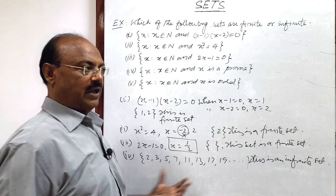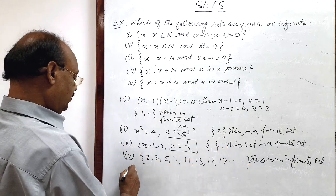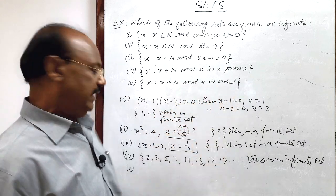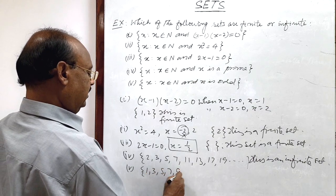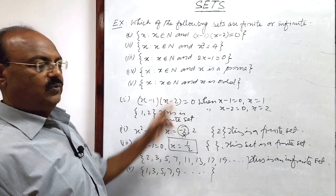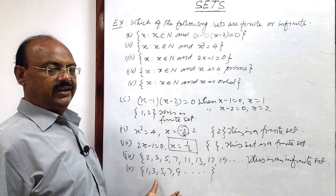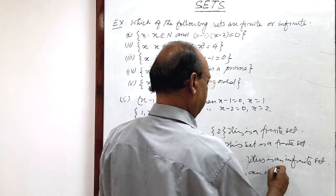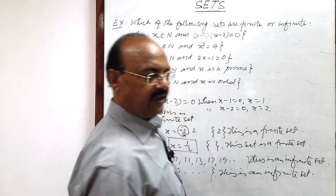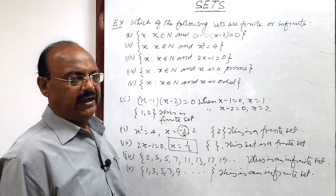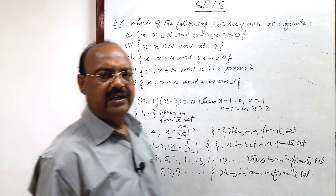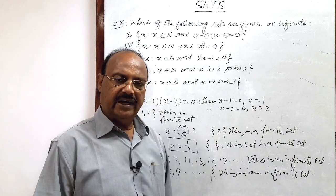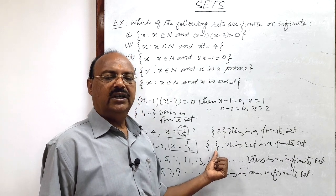Fifth: the set of x such that x belongs to natural numbers and x is odd. This is also an infinite set, because odd natural numbers are 1, 3, 5, 7, 9, and so on — there are countless such numbers. To summarize: if the number of elements in a set is finite, the set is a finite set; if infinite, it is an infinite set; and a null set is also considered a finite set.